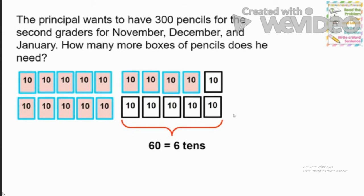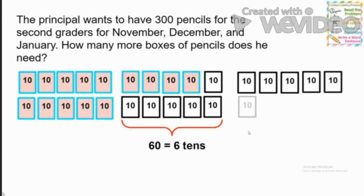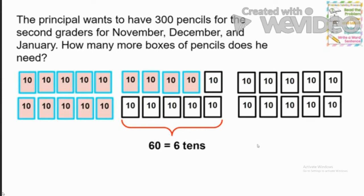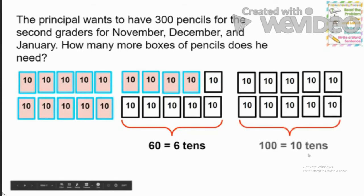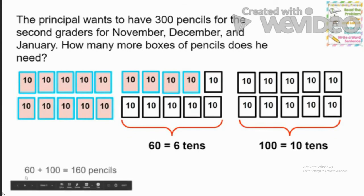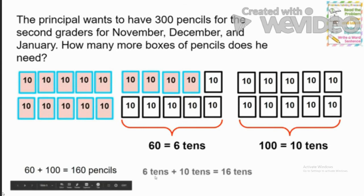Let's keep counting until we get to 300: 210, 220, 230, 240, 250, 260, 270, 280, 290, 300! For this part I added 100 pencils in 10 groups of 10 — ten tens. Now I'm going to add the 60 pencils from before and the 100 pencils just added: 60 plus 100 gives us 160 pencils. In unit form: 6 tens plus 10 tens equals 16 tens. If I have 16 tens, then I need 16 more boxes of pencils.